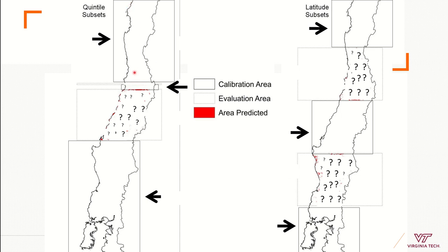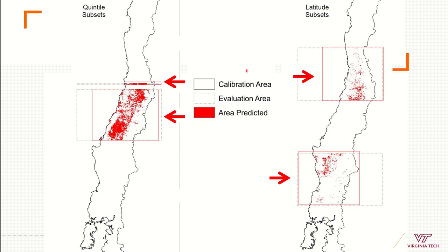The configurations could be different — it could be in terms of area, using the same amount of area for each calibration section to check evaluation areas. Or it could be related to the amount of points, using the same proportion of points for evaluation and calibration. Here I'm using the same area for every calibration section. Here I'm taking into account the amount of points, so I have the same number of points in each section for evaluation. Each quantile had the same proportion of points, so you can divide your evaluation data set in terms of points or in terms of area.